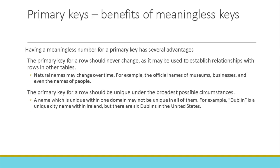Having a meaningless number for a primary key has several advantages. The primary key for a row should never change, as it may be used to establish relationships with rows in other tables. But natural names of things may change over time — for example, the official names of museums, businesses, and even the names of people change. The primary key for a row should also be unique under the broadest possible circumstances. A name which is unique within one domain may not be unique in all of them — for example, Dublin is a unique city name within Ireland, but there are six Dublins in the United States.